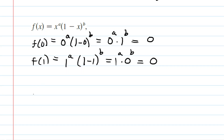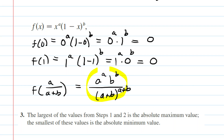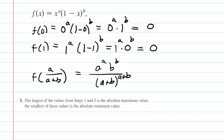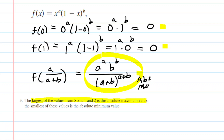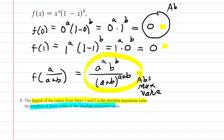Step three says the largest of the values from steps one and two is the absolute maximum. Our three values are 0, 0, and a^a b^b over (a plus b)^(a+b). Since a and b are positive numbers, this quantity is positive, so it is clearly the largest. Therefore, the absolute maximum value on the given interval is a^a b^b divided by (a plus b)^(a+b). The smallest value — 0 — is the absolute minimum. This completes the analysis.